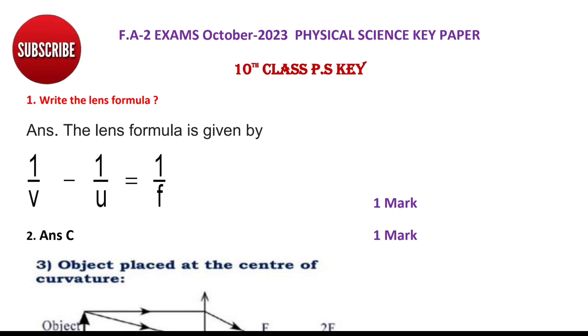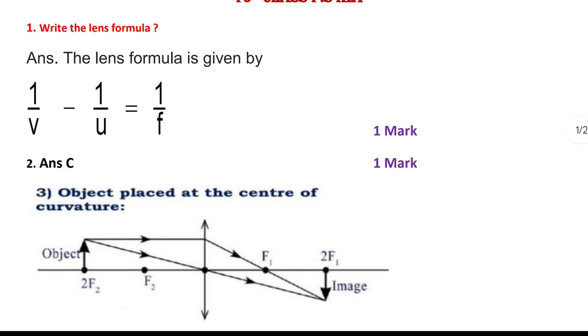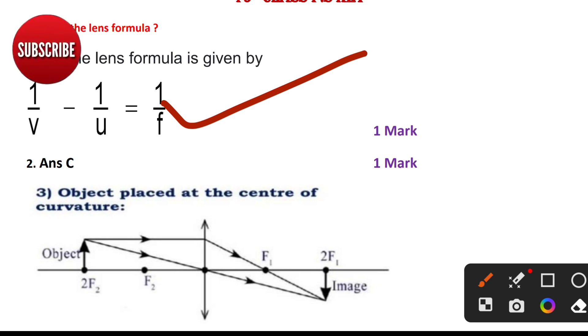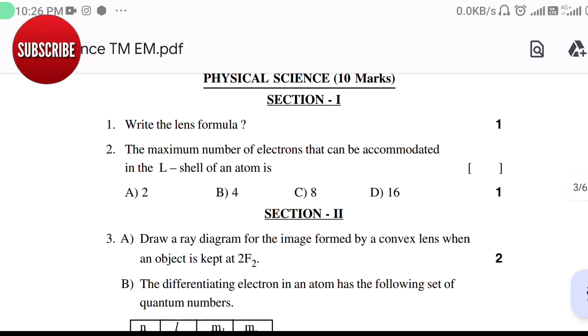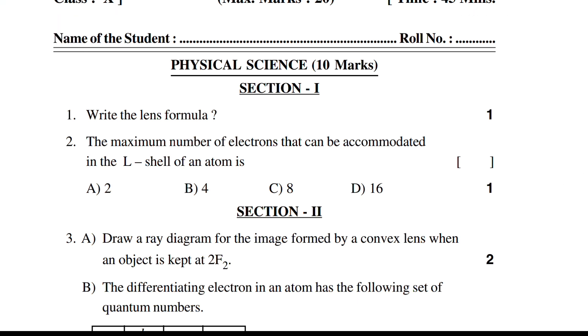Answer: Option C. The lens formula is given by this one. Second answer: Option C. The maximum number of electrons that can be accommodated in the L shell of an atom is 8, Option C.